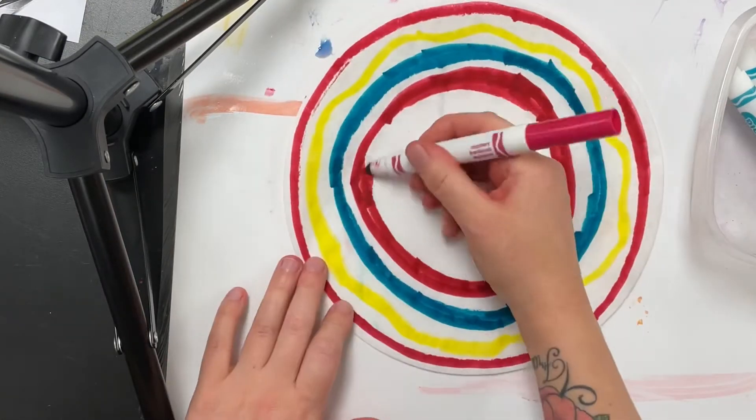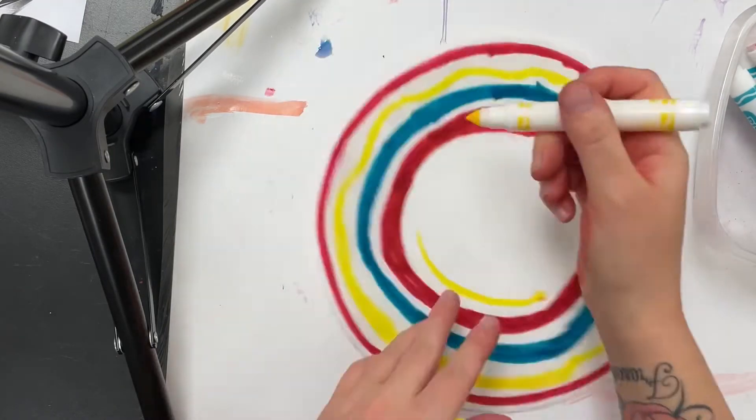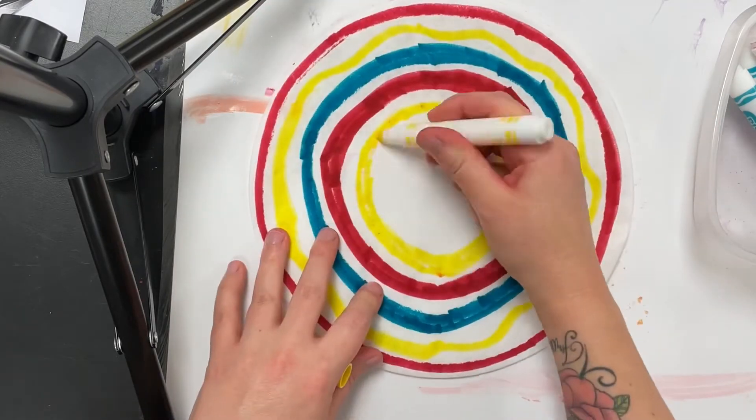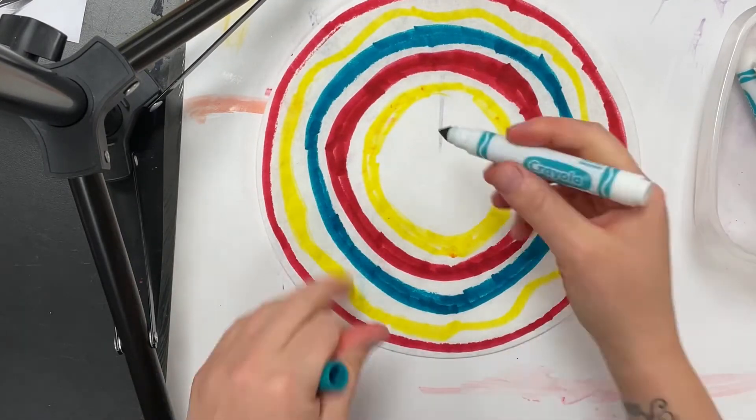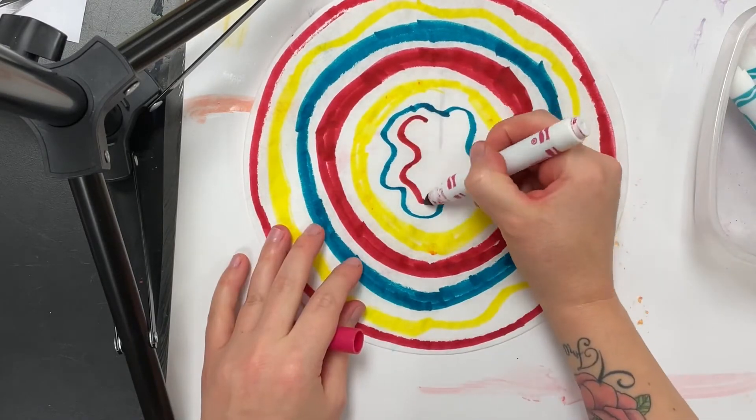My circles are getting smaller as I go towards the center. I'm kind of doing a pattern of colors as you can see - you can do something similar or completely different. I'm going to do these wavy lines inside here, and they're shrinking.